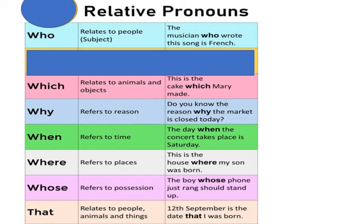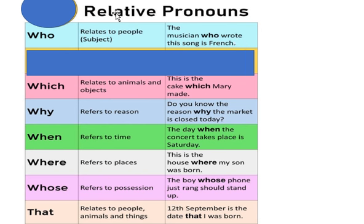Number 4 — copy this in your notebook. 'Who' — related to people, quando me refiro a pessoas. Example: 'The musician who wrote this song is French.' O músico que escreveu esta música é francês. Because I'm talking about a person, I used the relative pronoun 'who.'